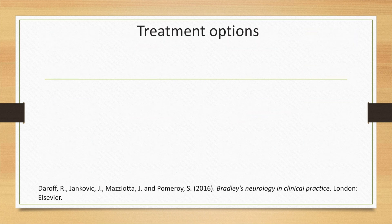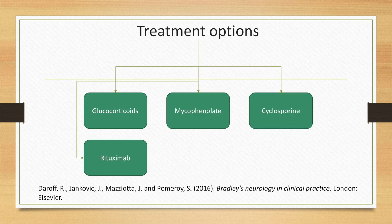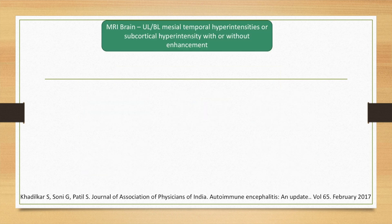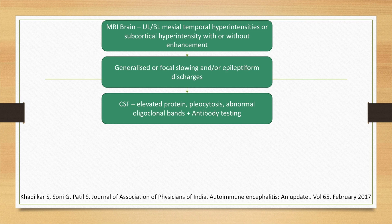For autoimmune encephalitis, treatment options include glucocorticoids, rituximab, mycophenolate, cyclosporine, intravenous immunoglobulin, and plasma exchange. In a patient with unilateral or bilateral mesial temporal hyperintensities or subcortical hyperintensity with or without enhancement on MRI brain, along with generalized or focal slowing or epileptiform discharges, elevated protein, pleocytosis, and abnormal oligoclonal bands along with antibody testing, we can consider autoimmune encephalitis.